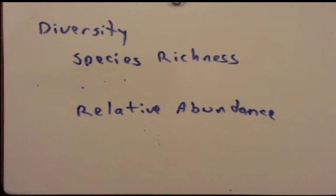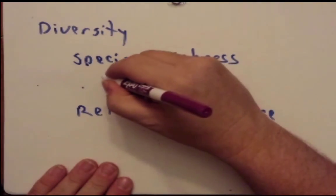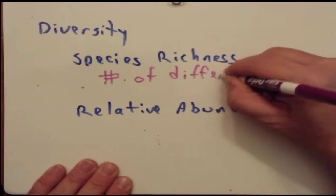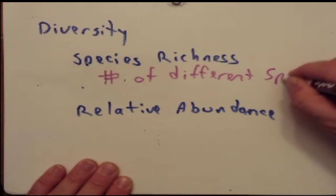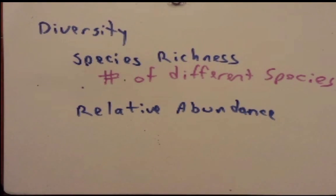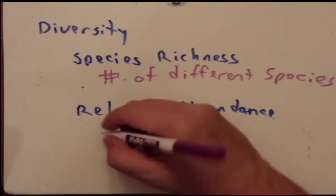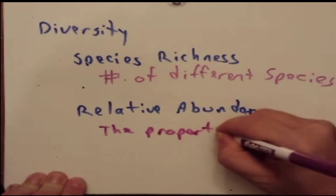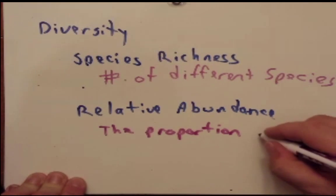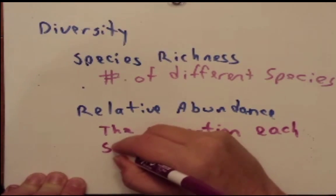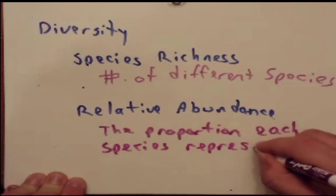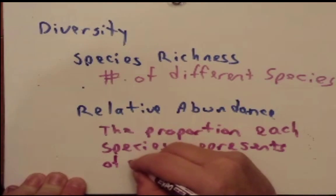Species richness means the number of different species. Relative abundance is the proportion of the community made up of different species — specifically, the proportion each species represents of all individuals in the community.